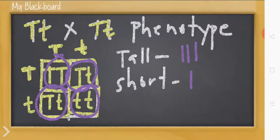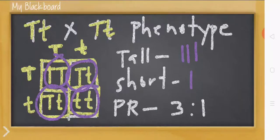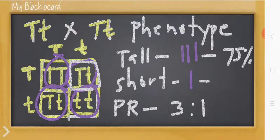Next we have the phenotypic ratio — the ratio of all phenotypes present in a given cross. The phenotypic ratio is 3 tall to 1 short, or 3:1. Assuming each box represents 25%, that means 75% are tall and 25% are short.